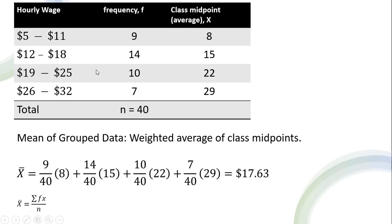Perhaps we did a survey asking 40 people on their hourly wage, and people could select between $5 and $11, $12 and $18, $19 through $25, or $26 through $32 as their answer choices. We see 9 people have an hourly wage between $5 and $11, 14 people selected that they have an hourly wage between $12 and $18, and so on.